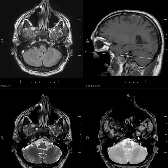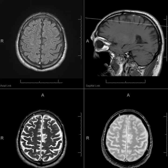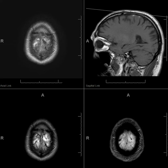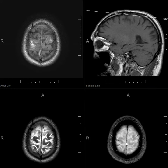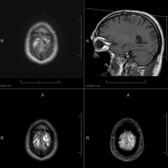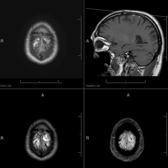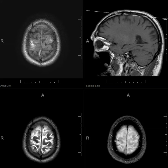You can see it better on the gradient echo images — the so-called cord sign, which is right here. The lining on the surface — the black lining you see — represents hemosiderin deposition. They are the clot.